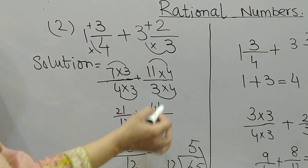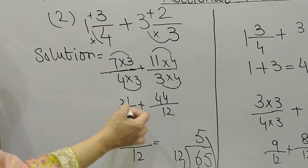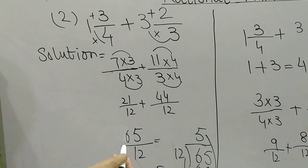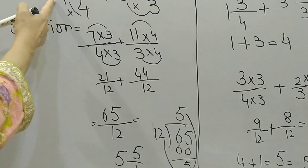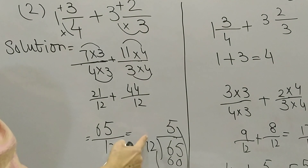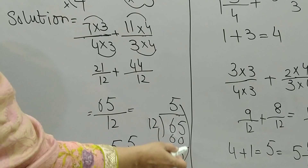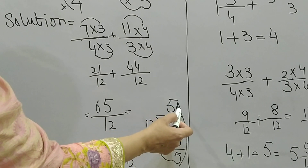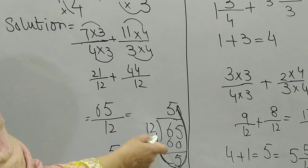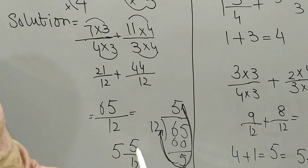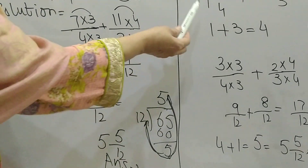7 threes are 21 and 4 threes are 12, so the first fraction is 21 by 12. 11 fours are 44 and 3 fours are 12, so the second fraction is 44 by 12. The denominators are now the same, so I add 21 and 44 to get 65 by 12. Since the question started with mixed numbers, I convert back: 12 fives are 60, remainder 5, giving the answer 5 whole 5 by 12.